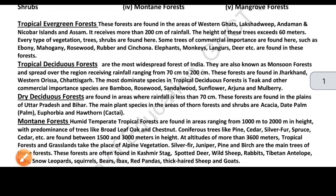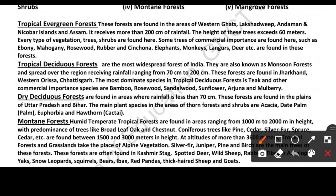Let's talk about Tropical Evergreen Forests. These forests are found in the Western Ghats, Lakshadweep, Andaman, Nicobar, and Assam — areas that receive above 200 cm of rainfall. Where there is very heavy rainfall, these forests are found.